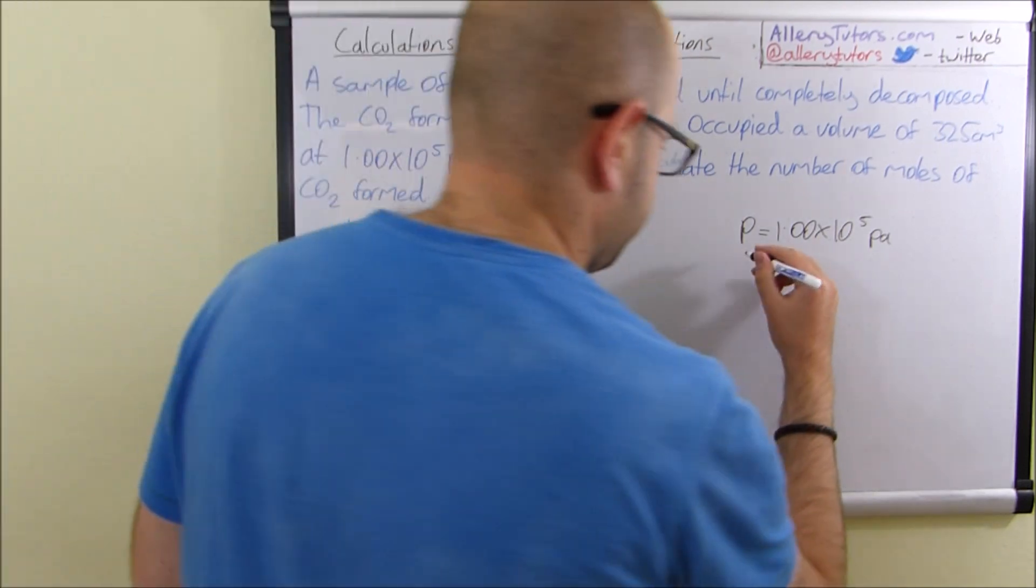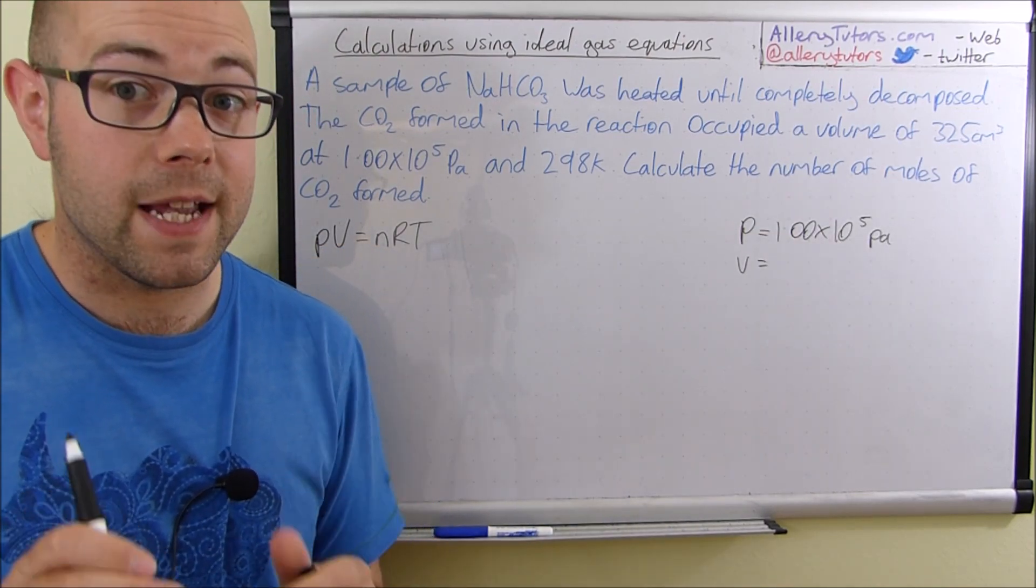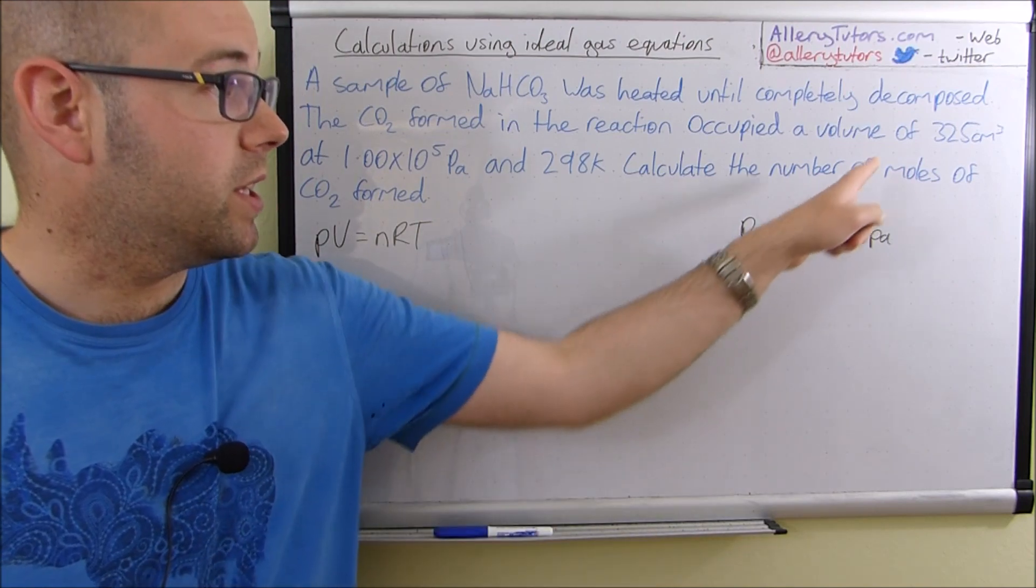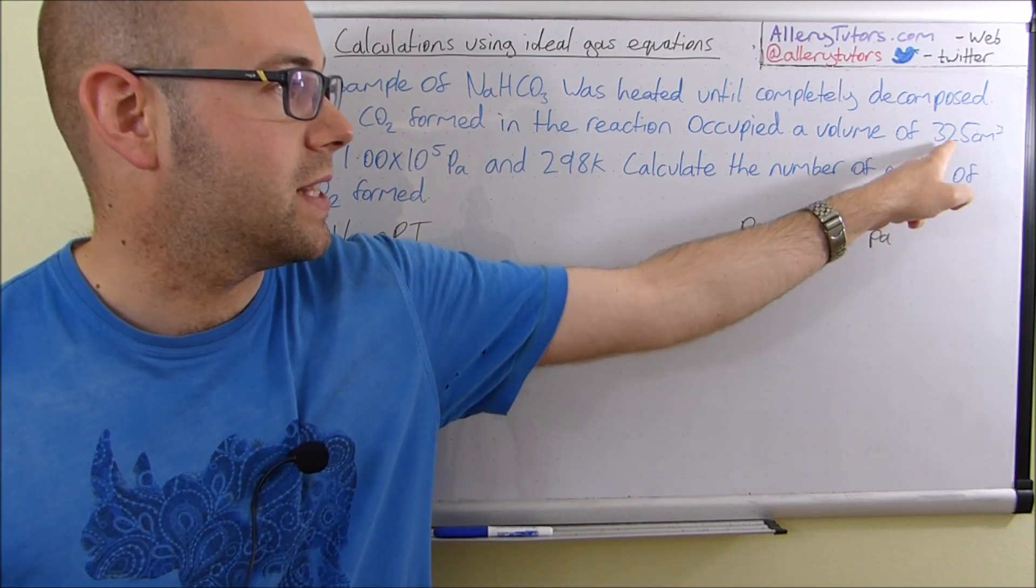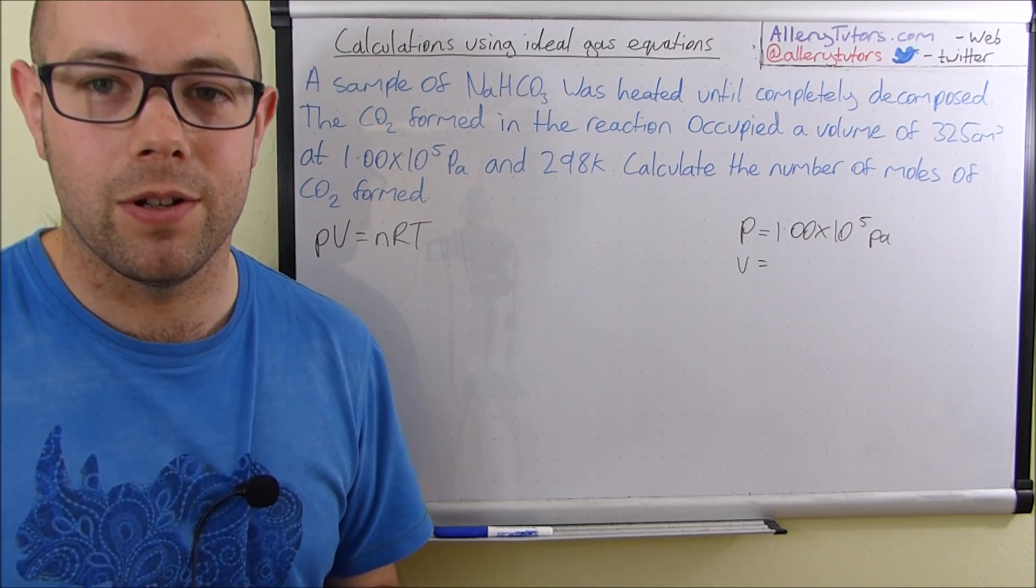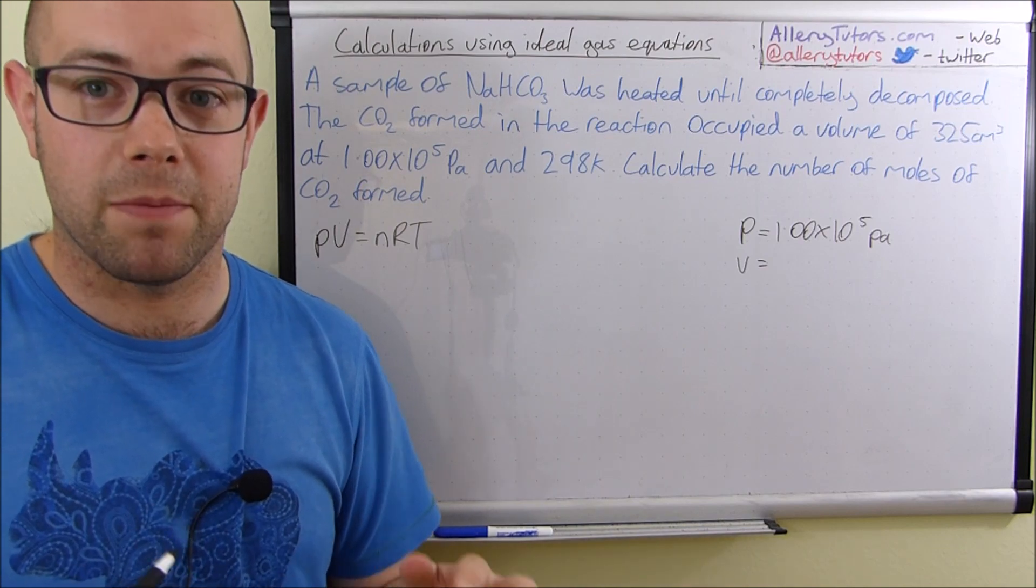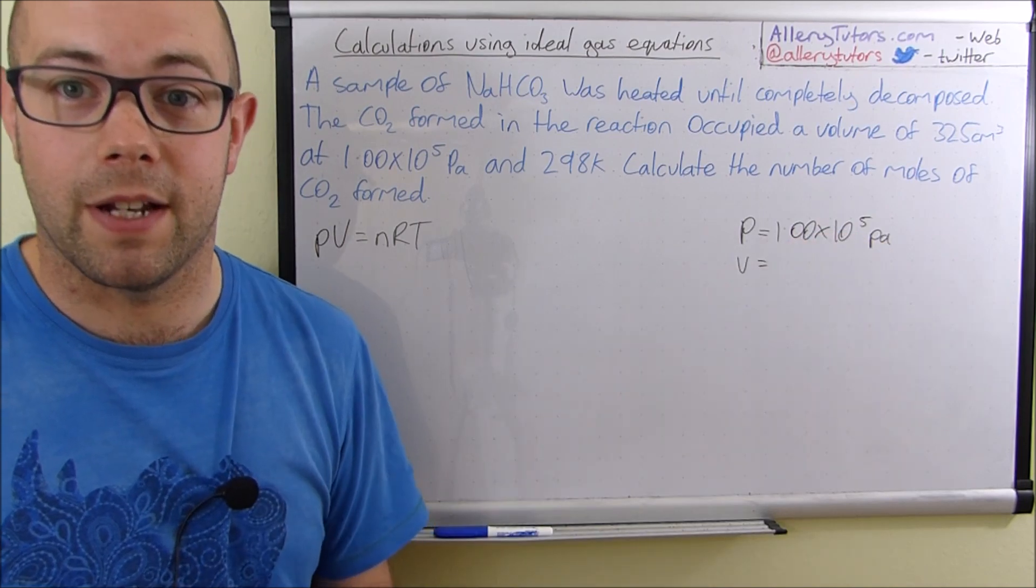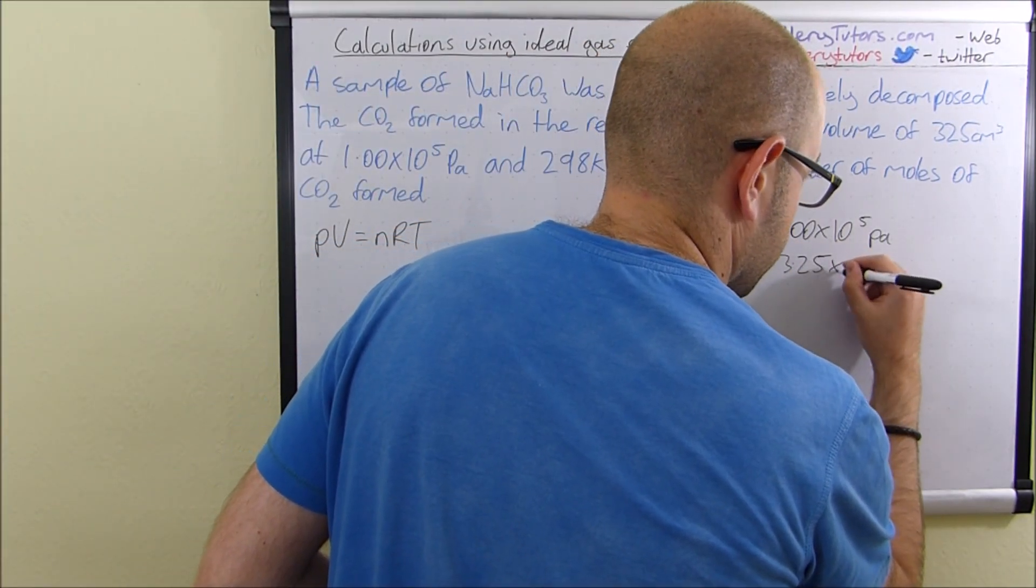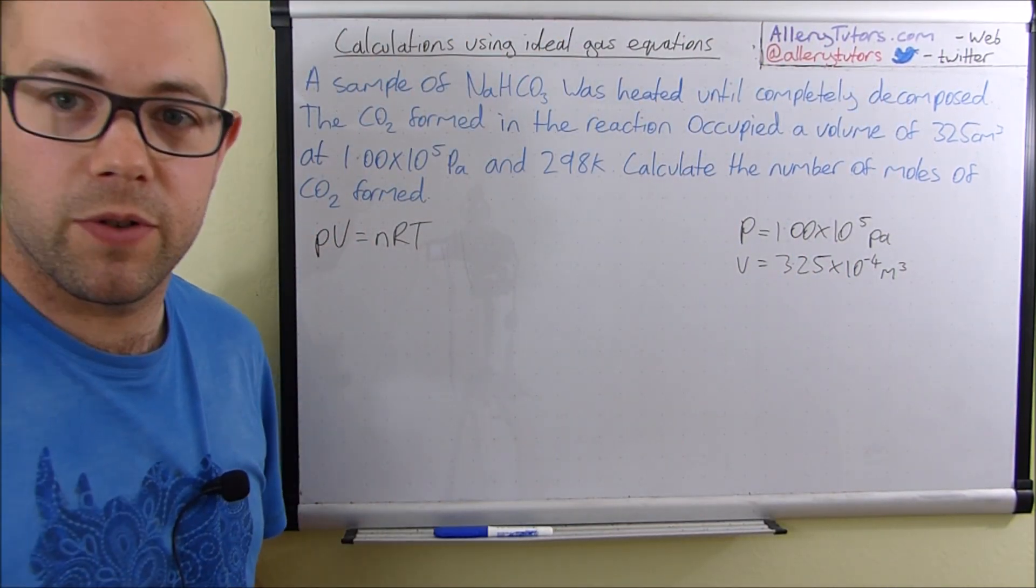V is the volume. So the volume in this case is 325 centimeters cubed. Now for this, we have to actually turn this into meters cubed. We can't use centimeters cubed in the calculation. So we need to convert this. A way in which you can do that is by dividing this by a million, and that would get you into meters cubed. If you don't know how to convert units, I have done a video that looks into converting units, in particular volume. So you really do need to know how to convert units. It's a basic skill. But if you're not sure, that's fine. Just click on the link below and you can have a look at the video there. So this one is going to be divided by a million, which is going to give us 3.25 times by 10 to the minus 4, and that's meters cubed. Very important. You must convert to meters cubed.